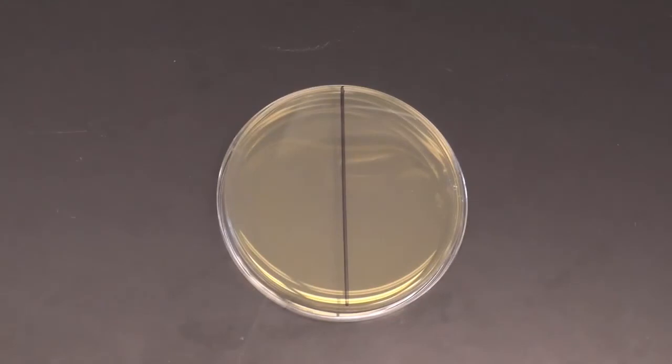Label an agar plate and draw a line down the middle of your plate at the bottom to divide the space in half. This allows you to plate two replicates of the same sample on the same plate.